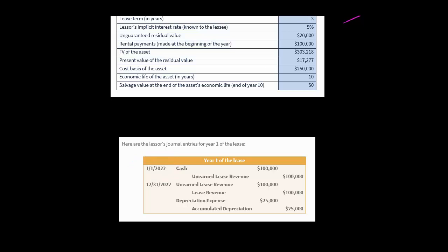On day one of the lease, the lessor is going to receive $100,000 cash from the lessee, so they record an increase to the cash account. However, they do not recognize lease revenue yet. Instead, they record unearned lease revenue — they increase that account by $100,000, and that is a liability on their statement of financial position.